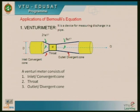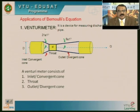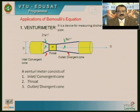Now we will commence today's class with the applications of Bernoulli's equation. Bernoulli's equation is widely applied in: number one, Venturimeter; number two, Orifice meter; and number three, Pitot tube. The Venturimeter and Orifice meter are devices used to measure the discharge in a pipe, whereas the Pitot tube is used to measure the velocity of flow in a pipe or a channel.